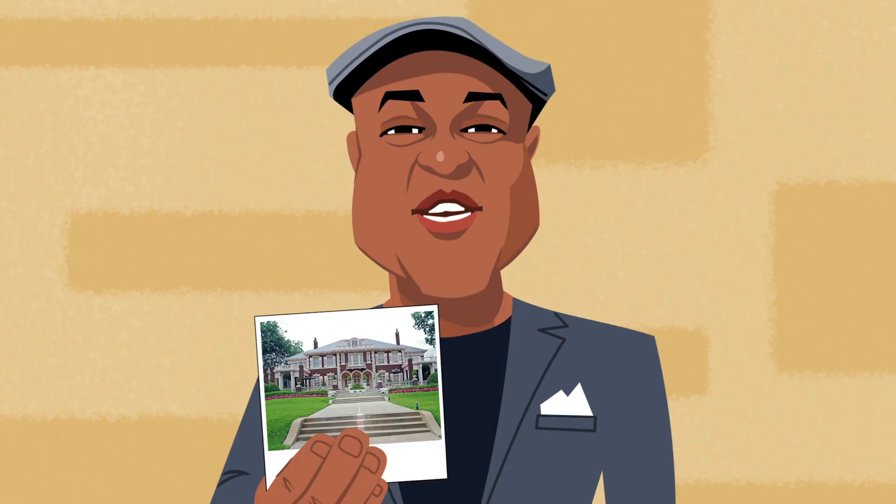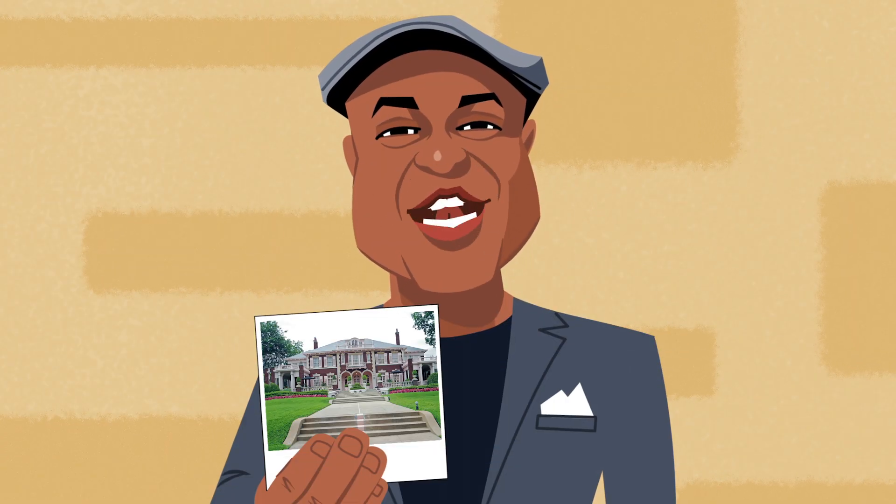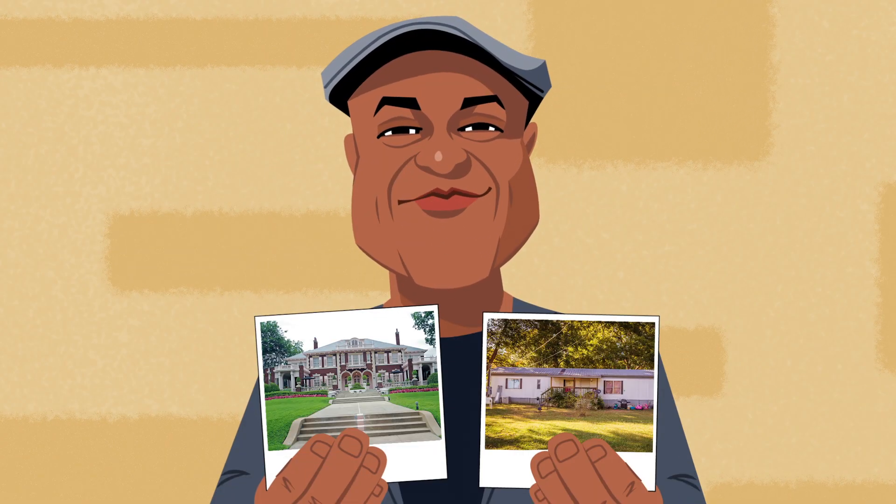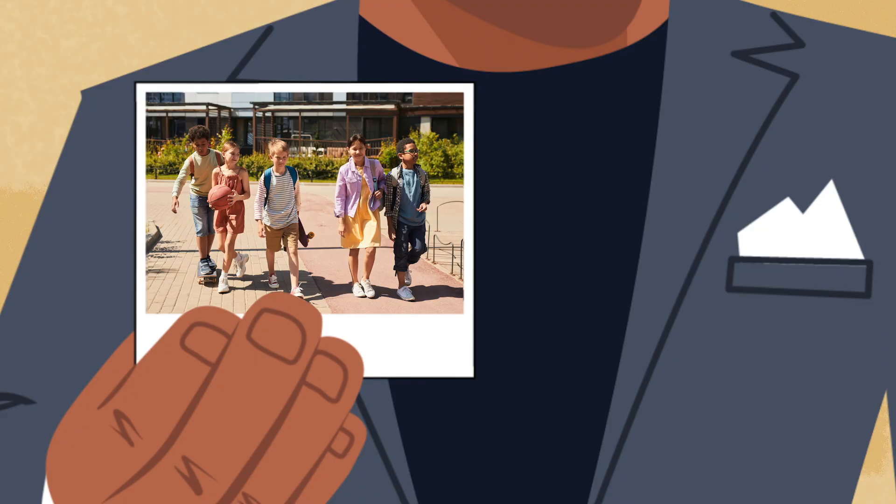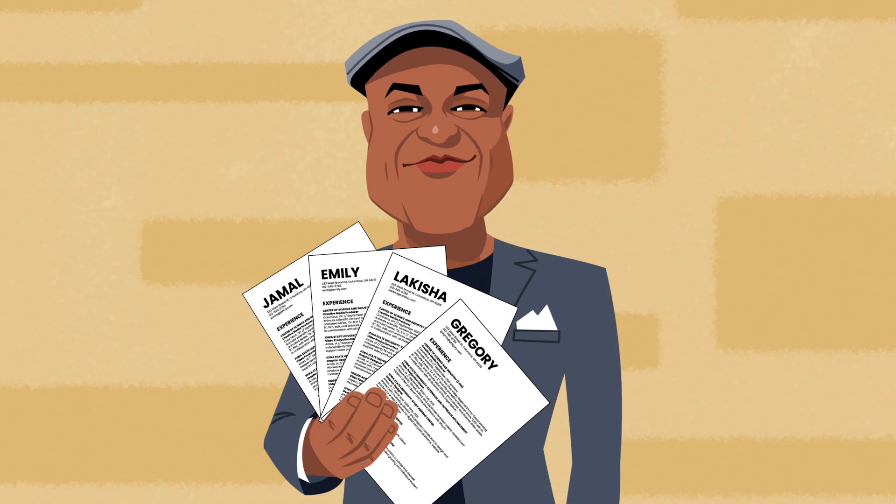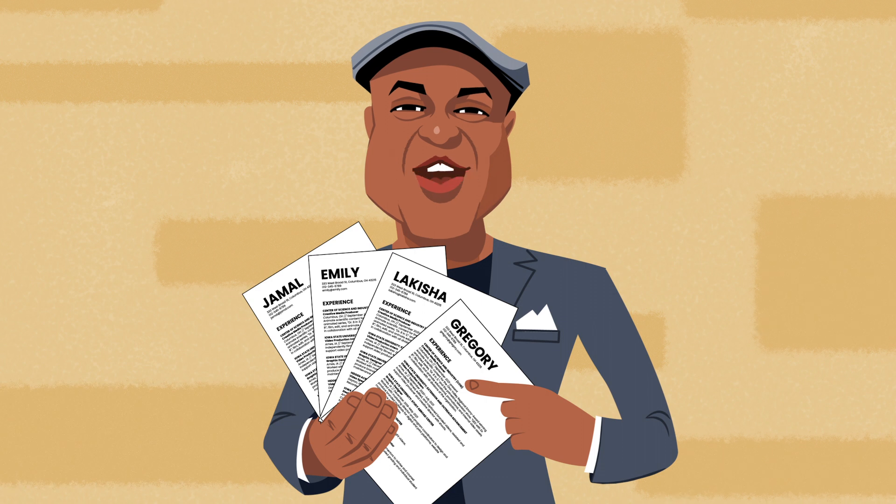Want an example? Perhaps you have immediate assumptions about who lives in a house like this. Or like this. Maybe you think some of these kids are athletic and others are good students. Or maybe you have a gut reaction about which of these job candidates would be more reliable.